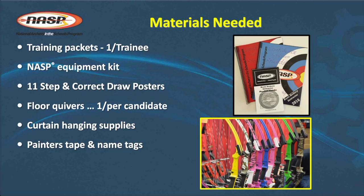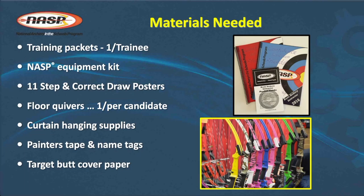Painter's tape or frog tape is generally what you use to put down your target shooting and waiting line — check with the school on which they prefer. You need name tags so that everybody in the class, including yourself, can have their name attached to their shirt in a place where it won't interfere with the bowstring when shooting is occurring. And you need some blank paper or newspaper to cover up the scoring rings on the target butts, because when teaching the 11 Steps to Archery Success, it's important that they shoot at blank bales with the rings hidden.